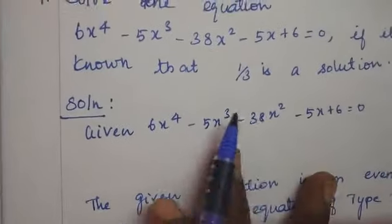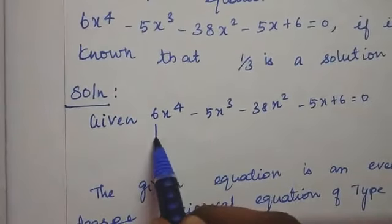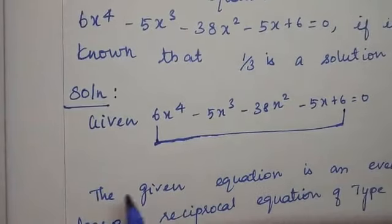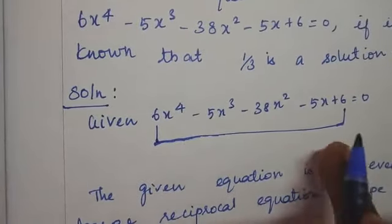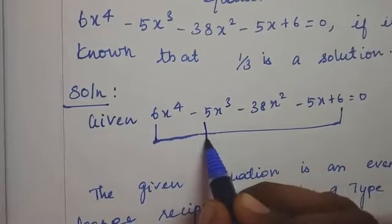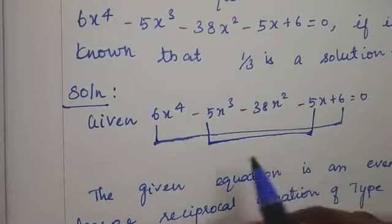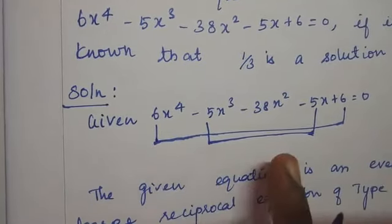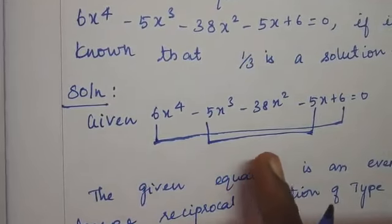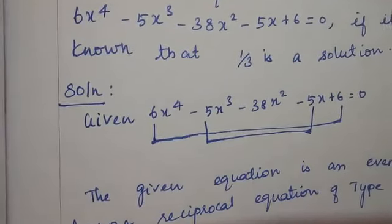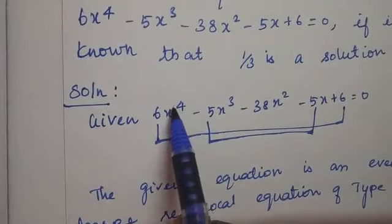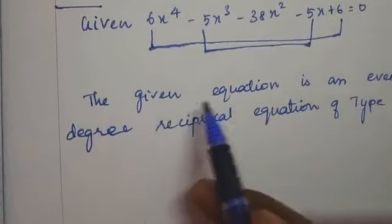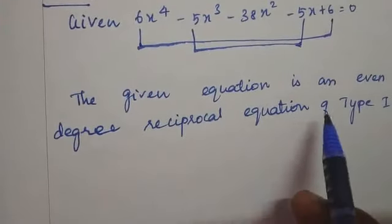We should check whether it is type 1 or type 2. The coefficient of the leading term (aₙ) equals the coefficient of the constant term (a₀) — the first and last terms are equal in sign as well as value. Likewise, aₙ₋₁ and a₁ are also equal in sign and value. The highest degree is 4, which is even, so the given equation is an even-degree reciprocal equation of type 2.